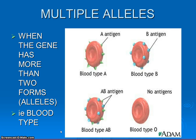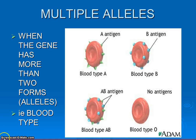Any of you know which blood type you are? If you do, you might be able to make some guesses about what your parents' blood types are as well. Let's look at the genetics behind this one. What makes this somewhat strange is that there are actually three different forms of this blood type gene. Scientists use the letter I to denote this gene.